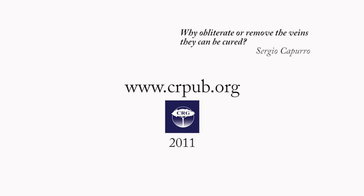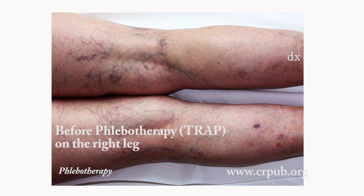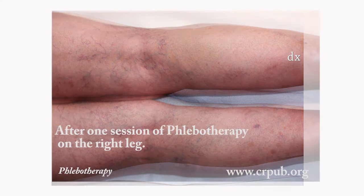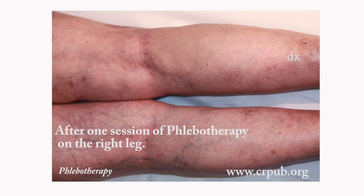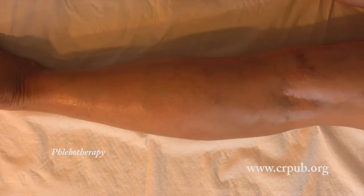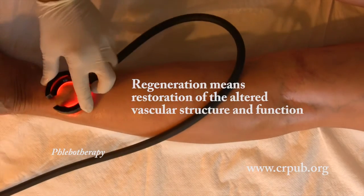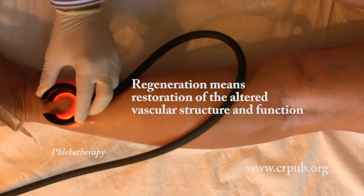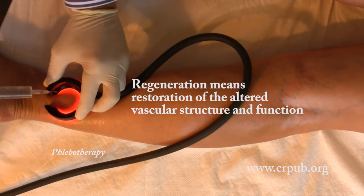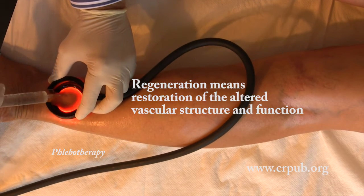Varicose veins that are visible to the naked eye, on translumination, or by means of near-infrared reflection and absorption techniques, constitute only the effect of varicose disease. To cure varicose disease, we have to treat the cause. This can only be done by regenerating the vessel walls. Regeneration means restoration of the altered vascular structure and function.